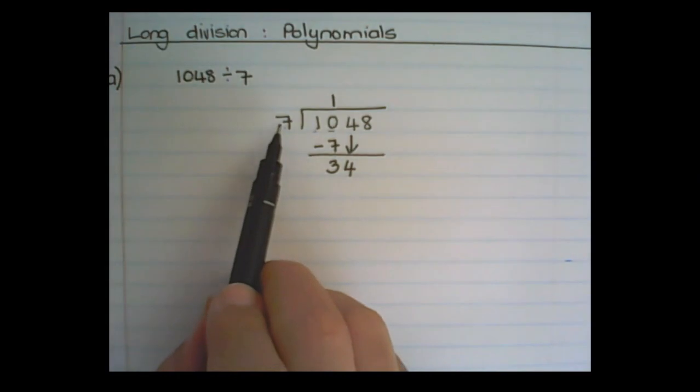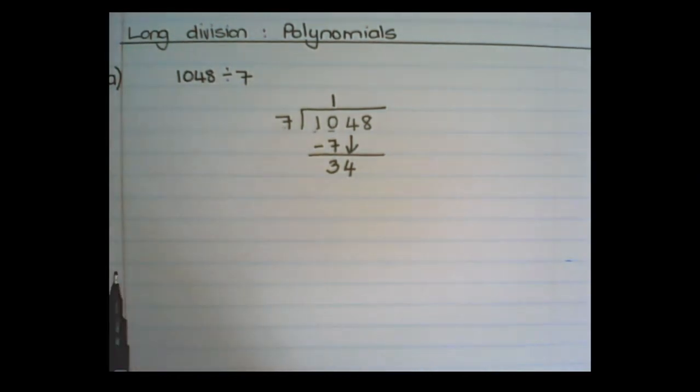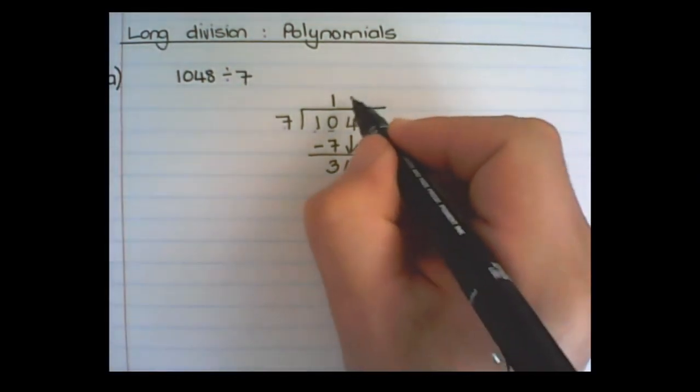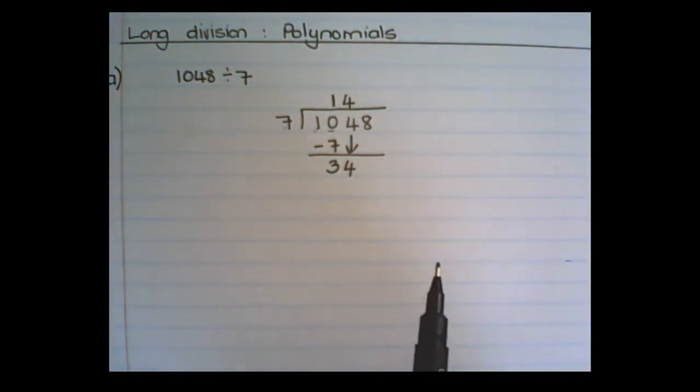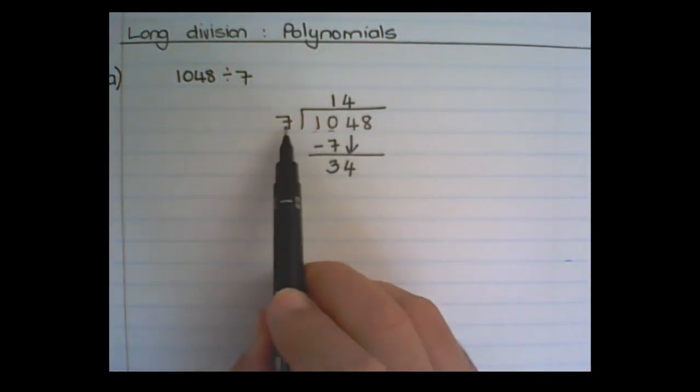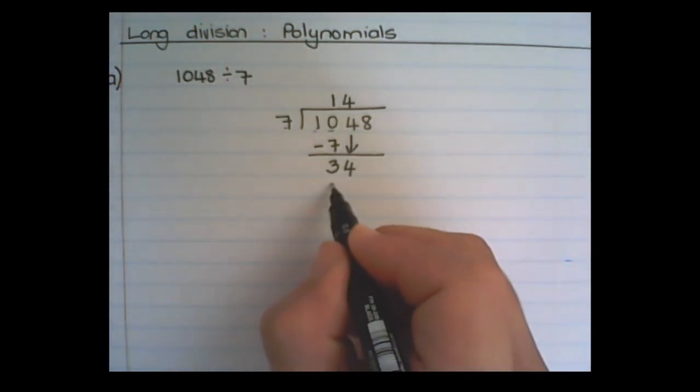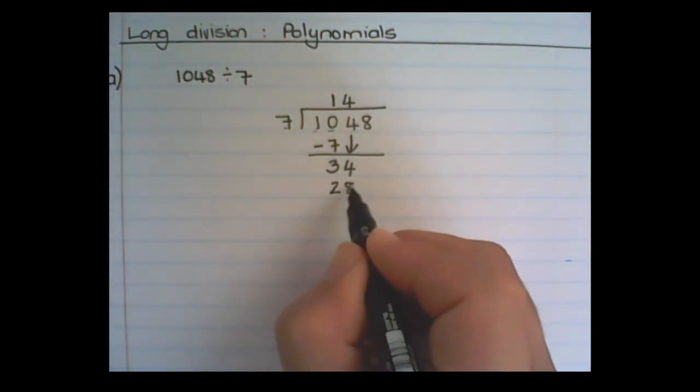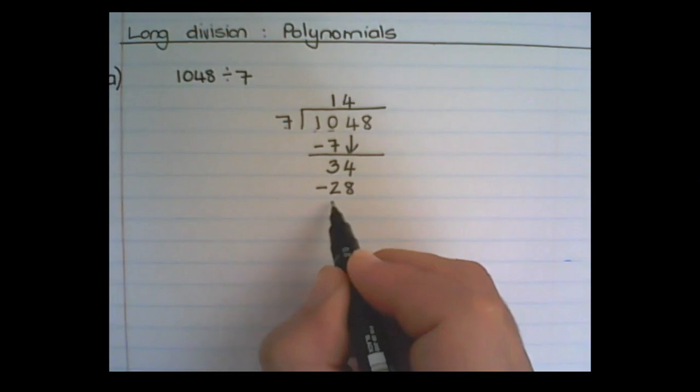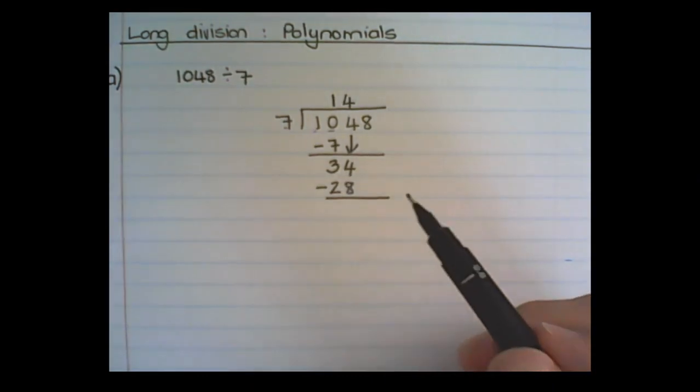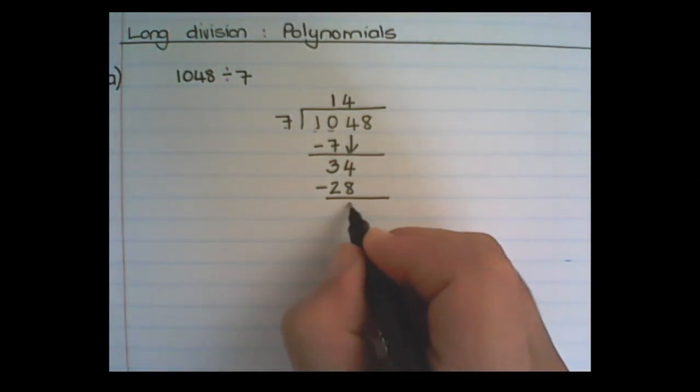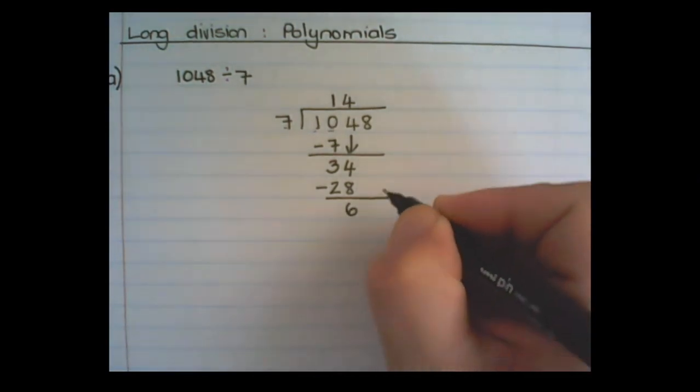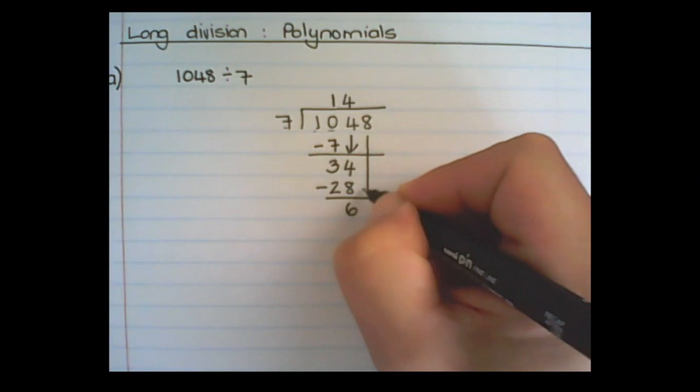Then 7 goes into 34, 4 times, if I count in 7's. So 4 times 7 is 28. And that is what I subtract. So 34 minus 28 is 6. And I bring the 8 down.